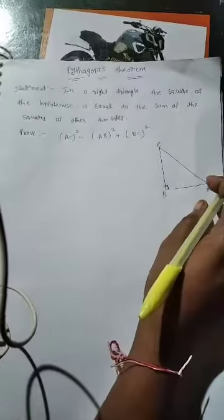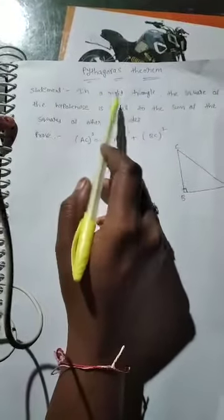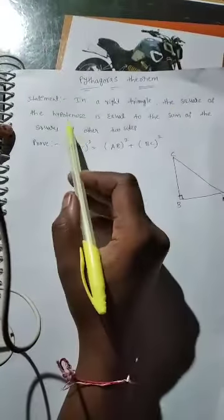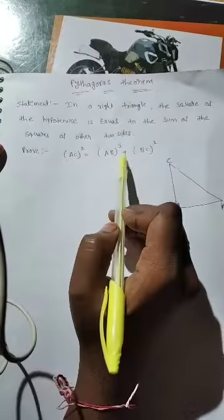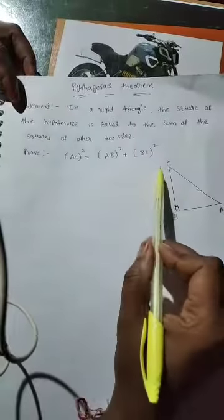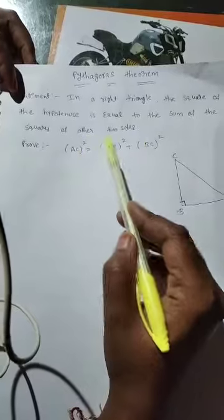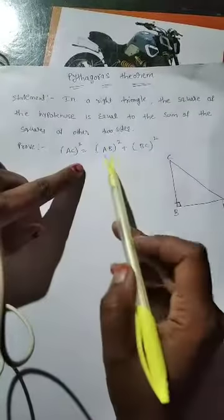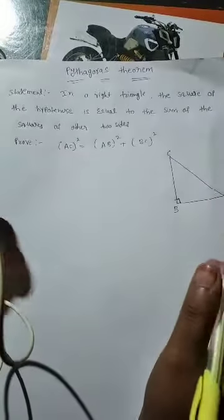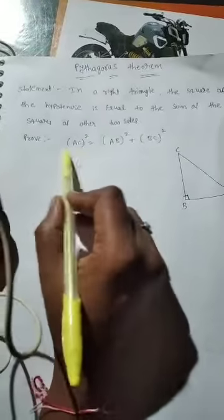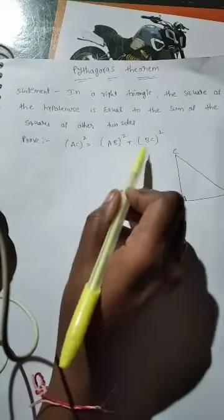Now here is the statement of the Pythagorean theorem: in a right triangle, the square of the hypotenuse is equal to the sum of the squares of the other two sides. So for a right angle triangle, AC square is equal to AB square plus BC square. We need to prove this: AC² = AB² + BC².